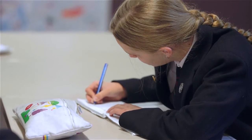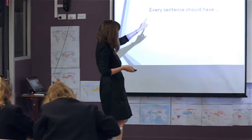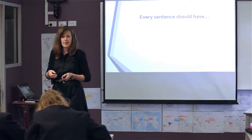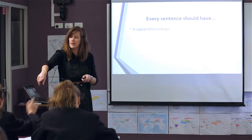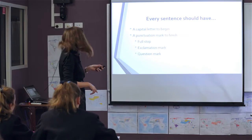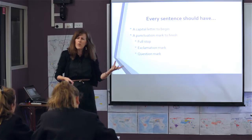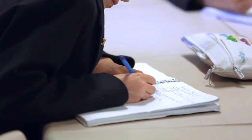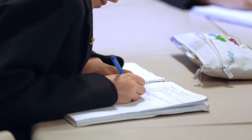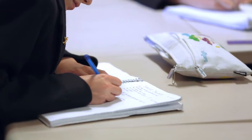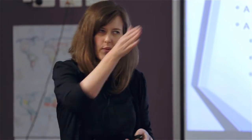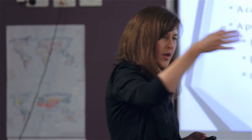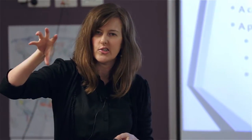So every sentence should have these four things. A capital letter to begin — you got that one. There's going to be some form of punctuation that finishes off our sentence: a full stop, an exclamation mark, or a question mark. So they're the easy bits. We know we need a capital and we know we need some form of punctuation at the end.